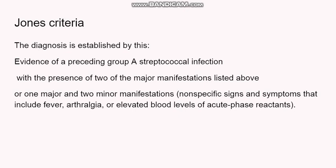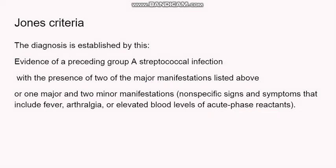There is a criteria to diagnose rheumatic heart disease known as the Jones criteria. Firstly, there should be evidence of preceding group A streptococcal infection, confirmed by antibodies found in the lab. Then there should be presence of two major manifestations — that is pancarditis, migratory polyarthritis, Sydenham's chorea, erythema marginatum, or subcutaneous nodules — or one major and two minor manifestations. The minor manifestations include fever, arthralgia, or any acute phase reactant like elevated CRP. Diagnosis is established by these criteria.